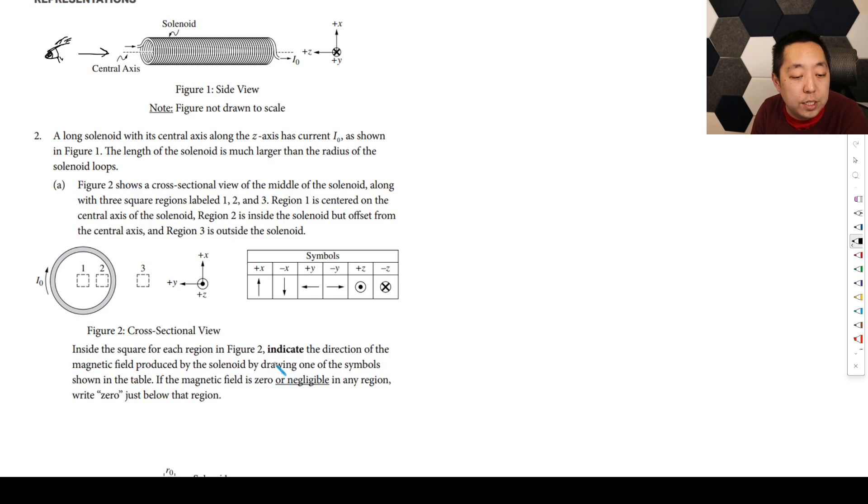Region 1 is centered in the central axis. Region 2 is inside the solenoid but offset from the central axis. Region 3 is outside the solenoid. Inside the square for each region, indicate the direction of the magnetic field produced by the solenoid by drawing one of the symbols shown in the table. If the magnetic field is zero or negligible, just write zero below that region.